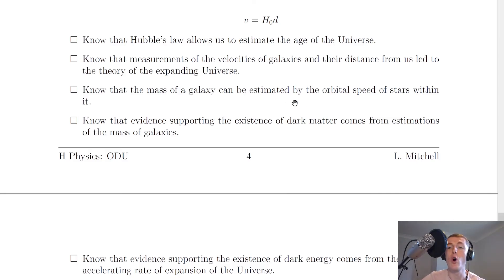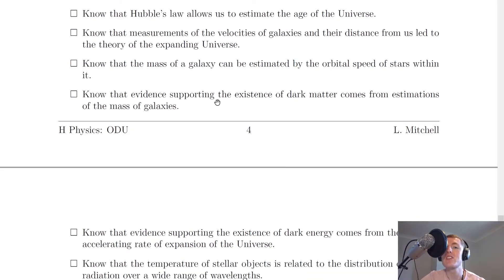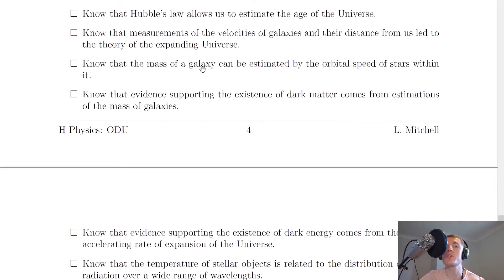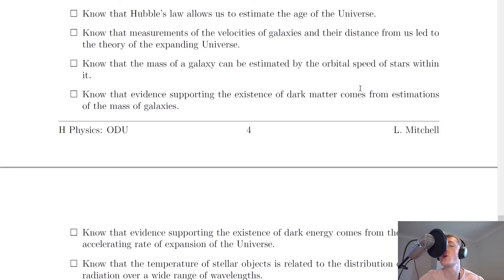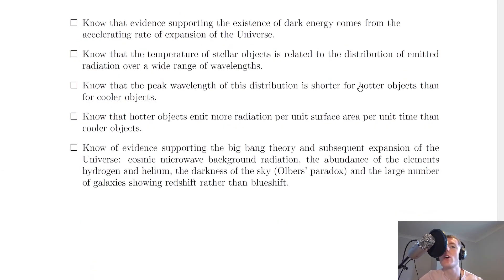You should know that the mass of a galaxy can be estimated by the orbital speed of stars within it — this relates to dark matter. Evidence supporting the existence of dark matter comes from estimations of the mass of galaxies. Dark matter explains the difference between what was observed and what was predicted for the orbital speeds of stars within galaxies, thought to be due to matter we cannot see.